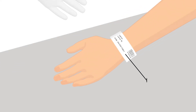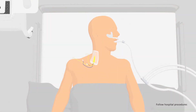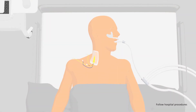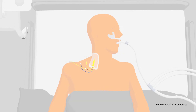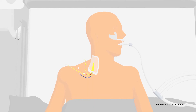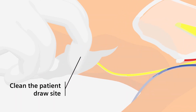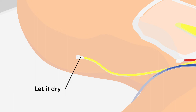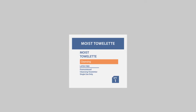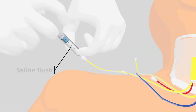Before obtaining the venous sample, confirm the patient's identity. Follow your hospital directives for the proper protocol when obtaining a blood gas sample by venipuncture, or from either a central line or a pulmonary artery catheter. Clean the venous blood draw site or the central line cannula port and let it dry. Do not use a cleaning wipe that contains quaternary ammonium substance, such as benzalkonium, as it may affect the electrolyte parameters reported, particularly sodium.